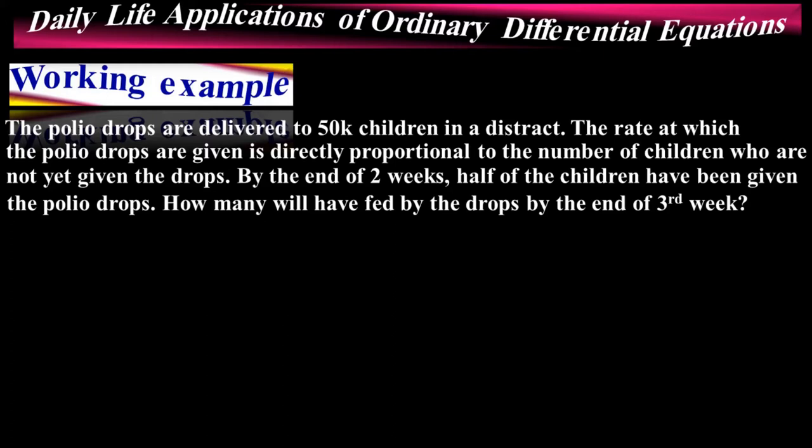The statement says there are 50,000 children that need polio drops. After two weeks, half of the children have been given the drops, which means 25,000 children have received them. The task is to find how many children will have received the drops by the end of the third week — that is, after three weeks.